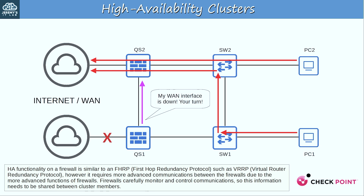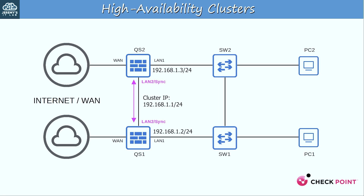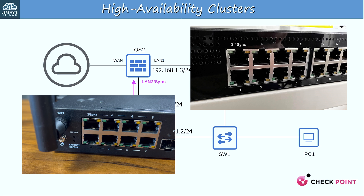Firewalls carefully monitor and control communications, so this information needs to be shared between cluster members. To enable this communication between the firewalls, they need a dedicated sync connection. On these QS firewalls, the default sync interface is the LAN2 interface, as you can see by the labels on both my QS1590 and on my QS1600.